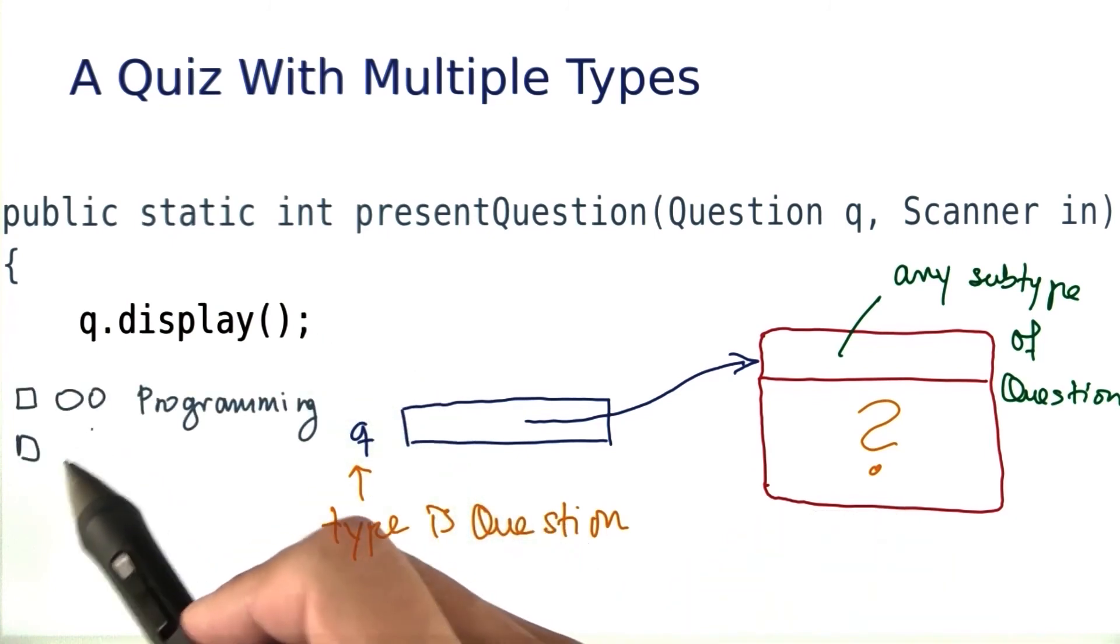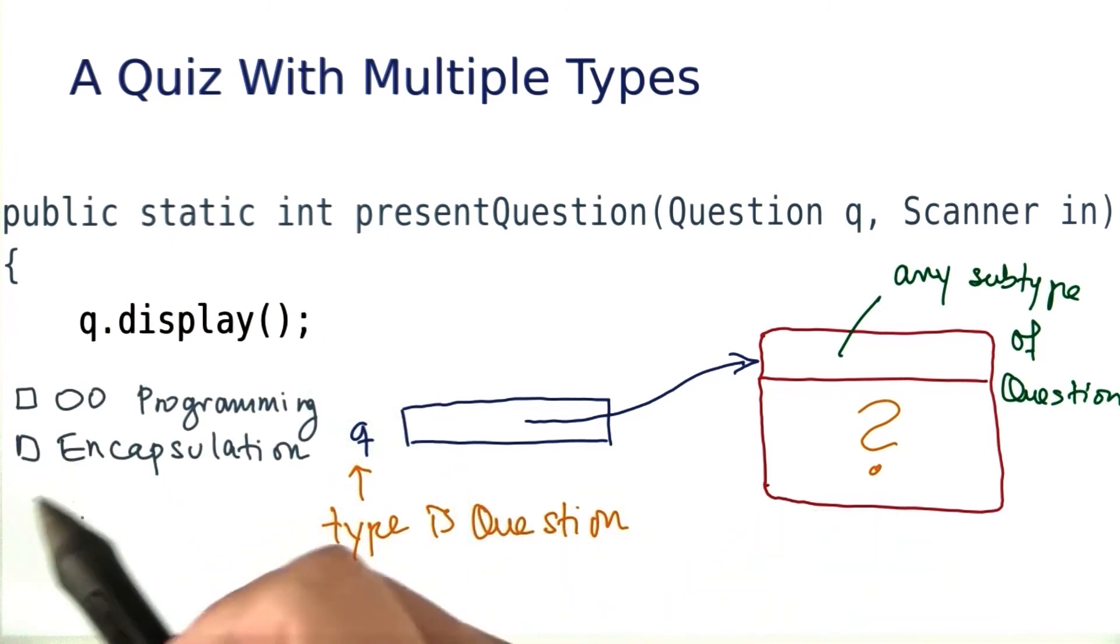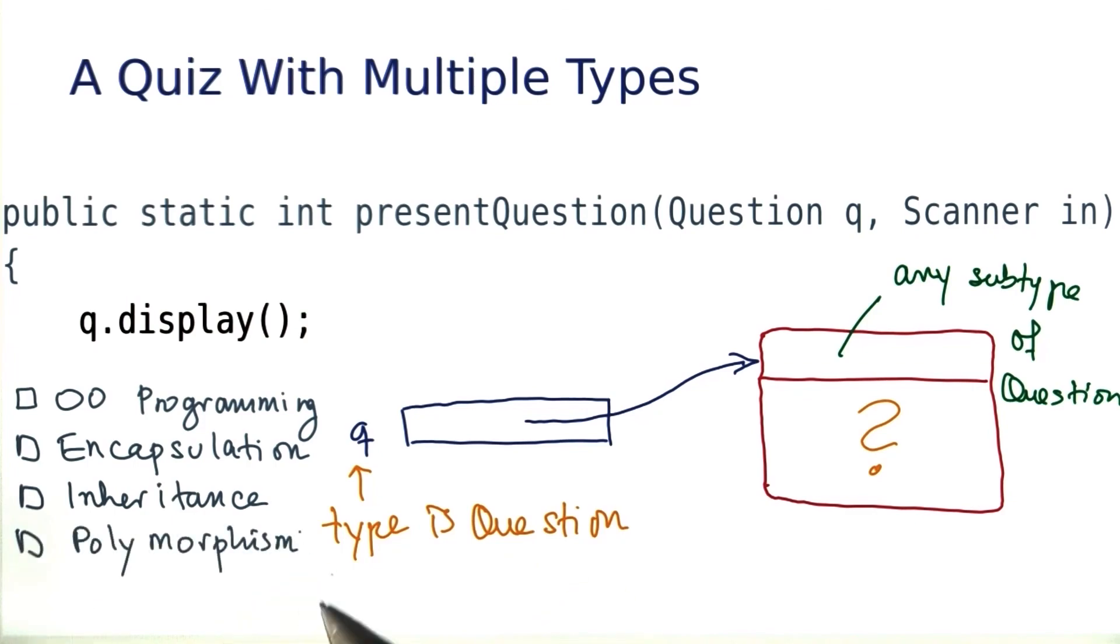Was it object-oriented programming, encapsulation, inheritance, or polymorphism?